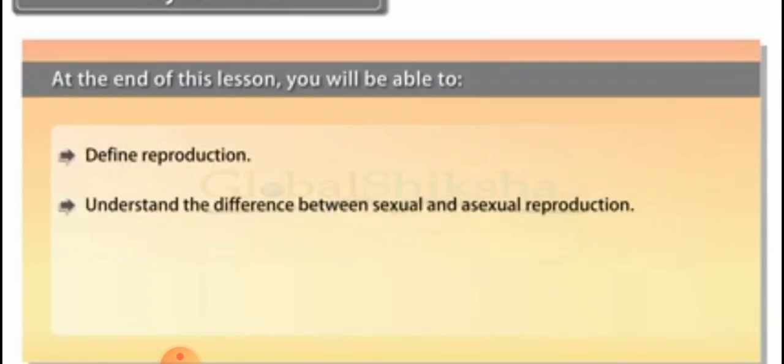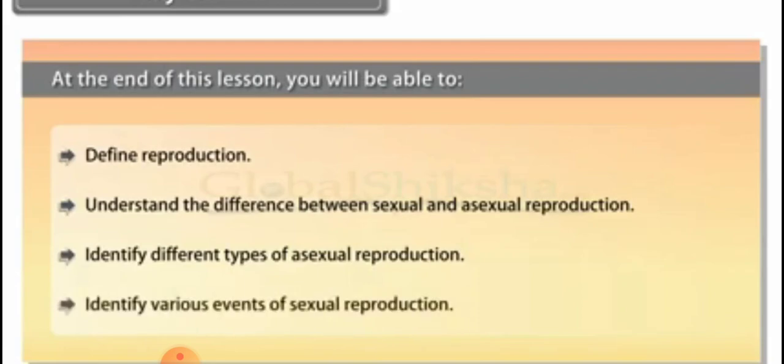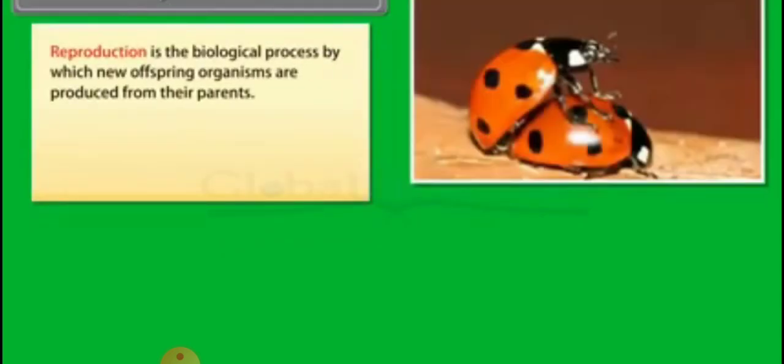So we will discuss the objectives related to chapter one, that is reproduction in organisms. We will come to know about reproduction, understand the difference between sexual and asexual reproduction, various modes of asexual reproduction, and events of sexual reproduction in this chapter.